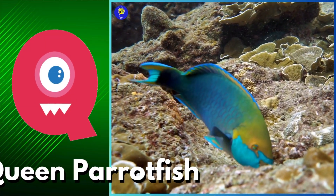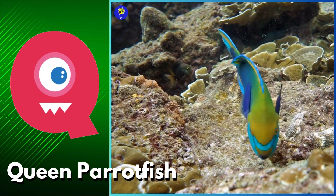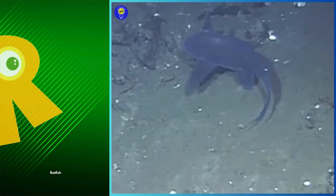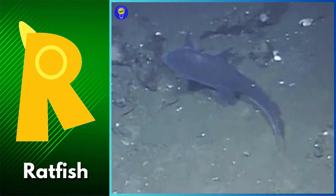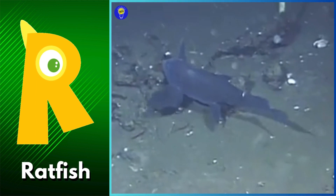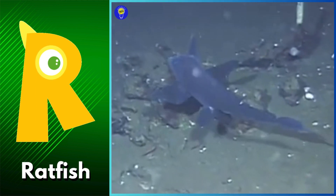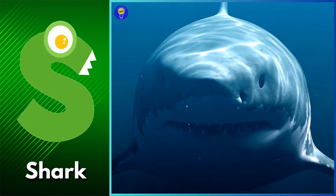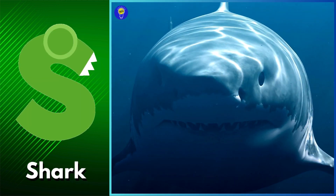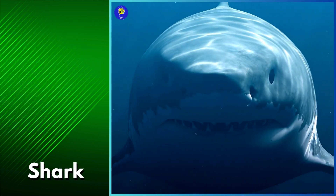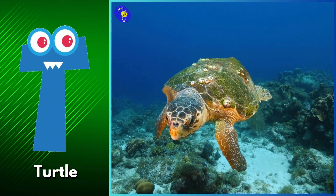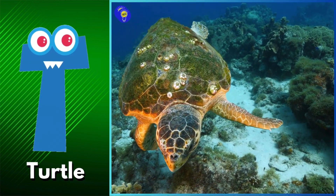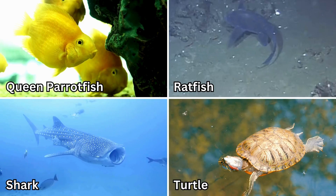Q is for queen parrotfish. Queen parrotfish. R is for ratfish. Ratfish. S is for shark. Shark. T is for turtle. Turtle.